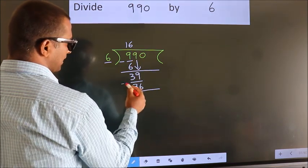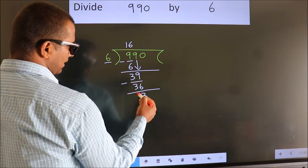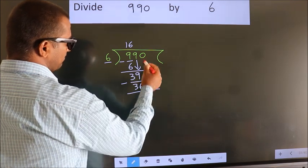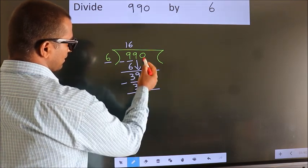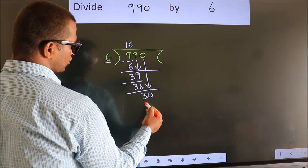Now we subtract. We get 3. After this, bring down the beside number. So 0 down. So 30.